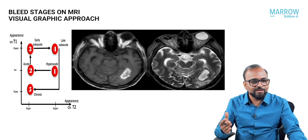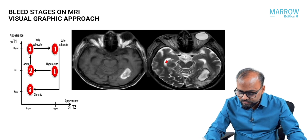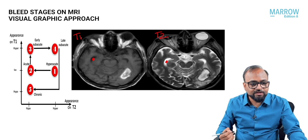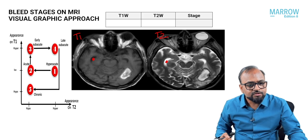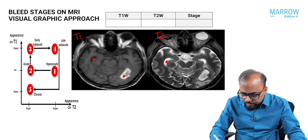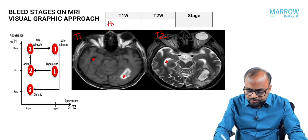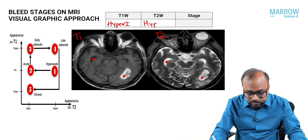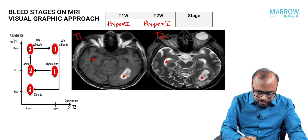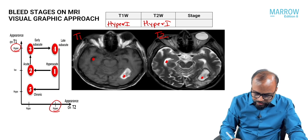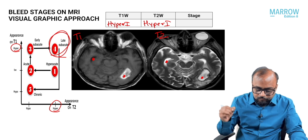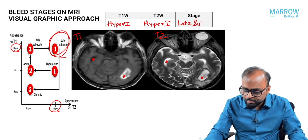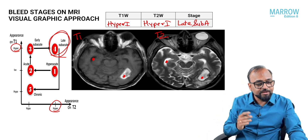Looking at these two images: CSF is bright on T2 and dark on T1. The lesion appears bright on T1 — hyper-intense — and also bright on T2 — hyper-intense as well. A lesion hyper-intense on both T1 and T2 is at point number four on the graph: the late subacute stage of bleed.